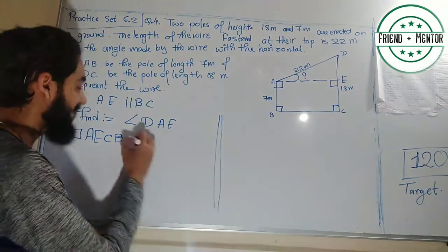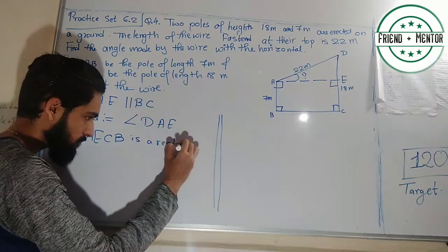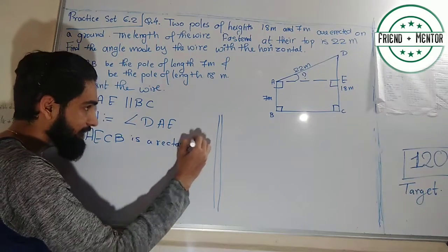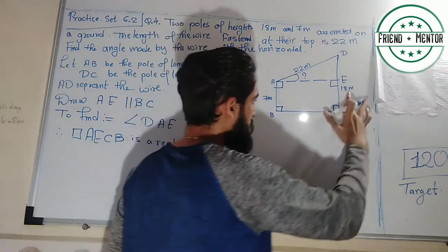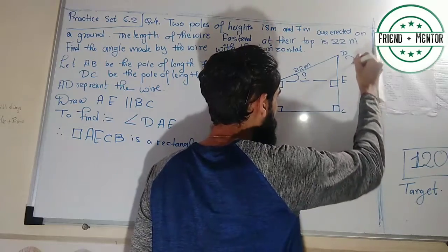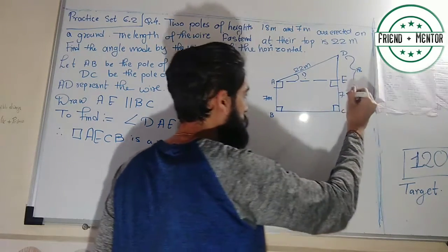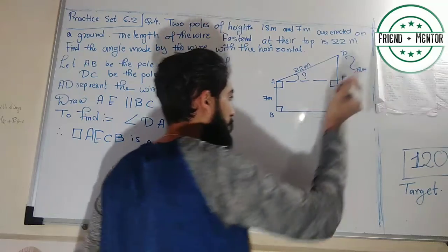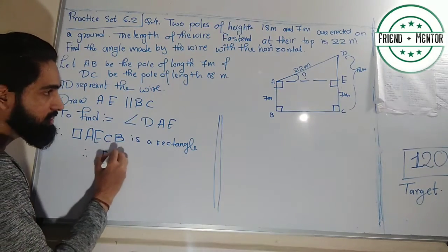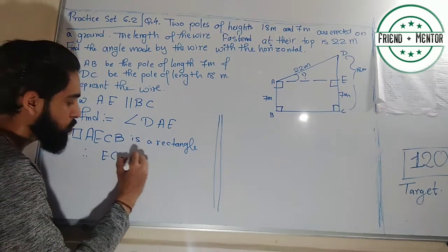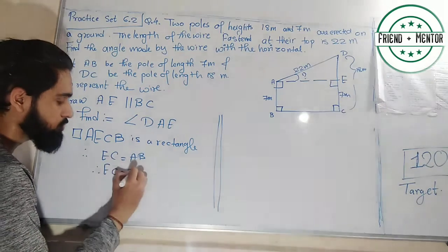Quadrilateral AECB is a rectangle. The benefit of it being a rectangle is that EC equals AB. Since the full height CD is 18 meters and the part EC corresponds to AB, therefore EC is equal to 7 meters.